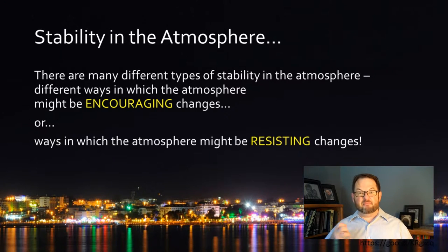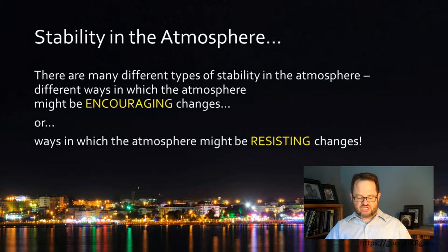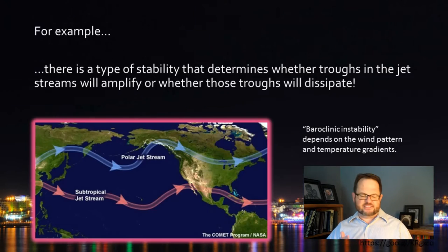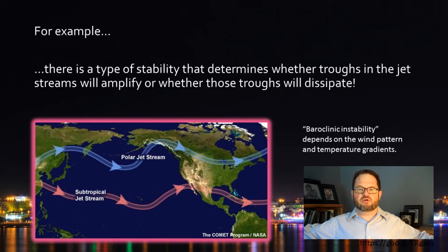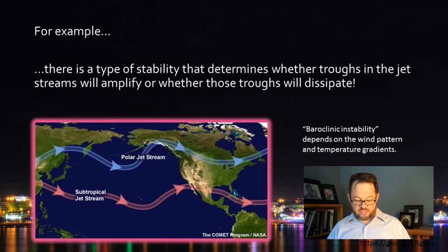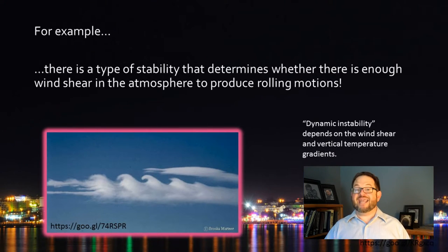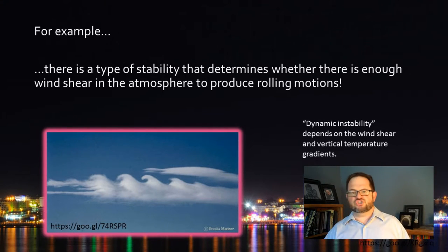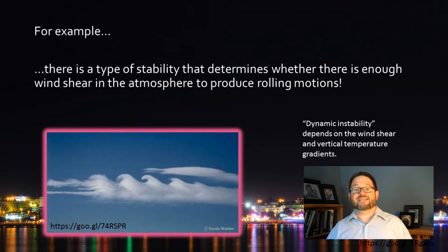There are many different kinds of stability in the Earth's atmosphere — different ways in which the atmosphere can either encourage or resist a big change. Only one of those, static stability, the title of this lecture, is important for what we're doing right now. Just to give you a sense of others: there's baroclinic instability, which is about whether troughs and ridges in the jet stream grow deeper or damp out as flow becomes more zonal. There's also dynamic instability — about whether there's enough wind shear to overcome resistance to rolling motions. If you have enough wind shear, you can get Kelvin-Helmholtz waves, which are seen in that picture.